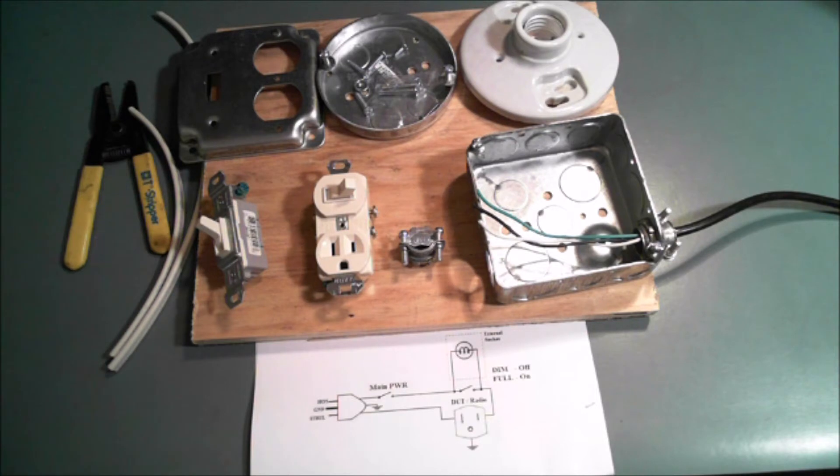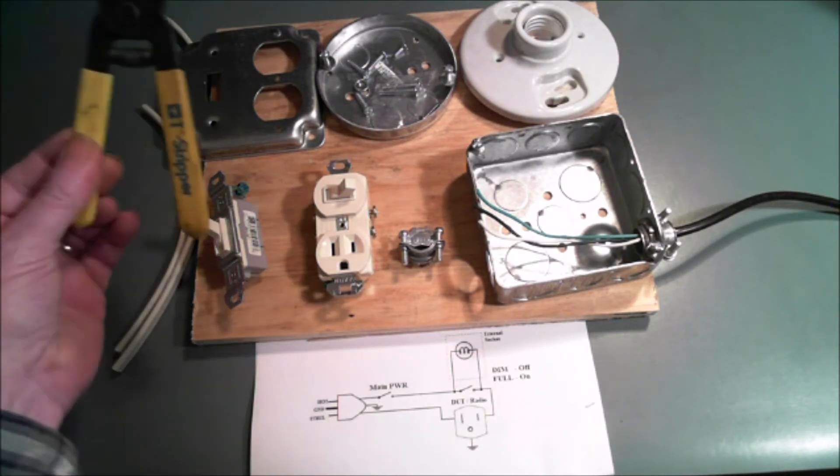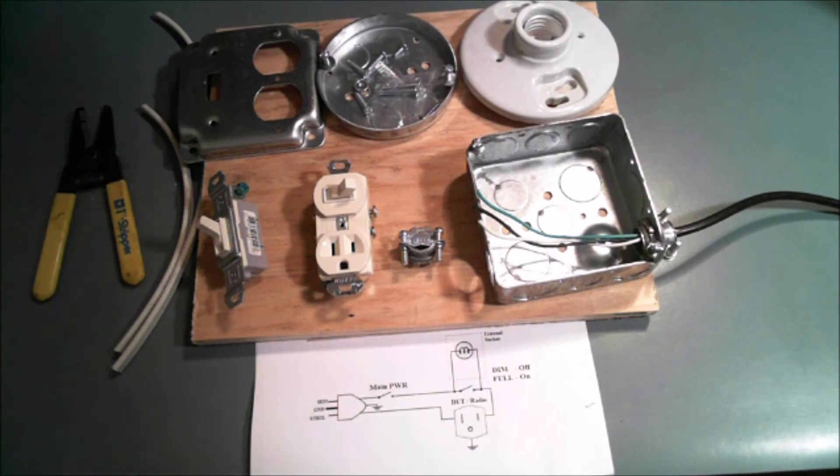If you are watching this video and thinking about building a dim bulb tester, then I can assume you already know how to wield a pair of wire strippers and turn a screwdriver. So I'm not going to bore you with a long drawn out video watching me strip insulation and twist wire and turn a screwdriver. So let me go ahead and put this together. And with the magic of the camera, I'll be back in just a few seconds.